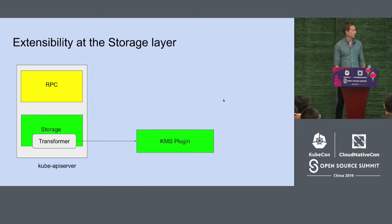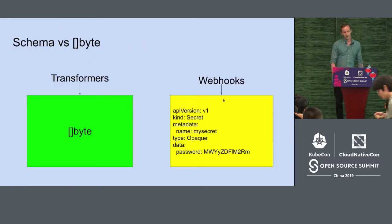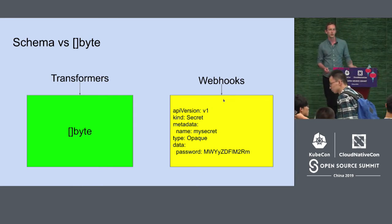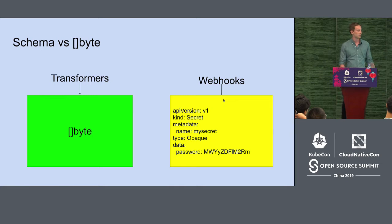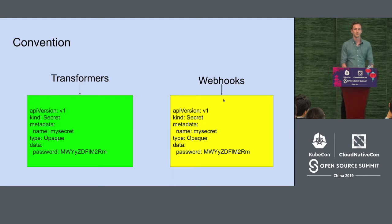A KMS plugin is an example of a transformer. The idea is the same: you inject some custom logic that sits in between your objects as they come in and out of etcd. By convention, transformers look at all the data as opaque byte blobs, while webhooks look at them as actual parsed objects and may mutate fields based on some logic. If you find yourself needing to do that, webhooks are probably a better fit for your use case.